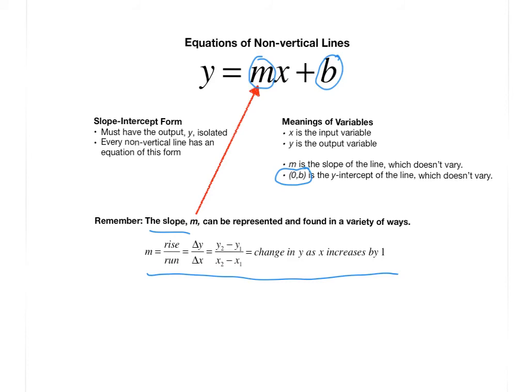The key to this form of a line, the slope-intercept form, is that y must be totally isolated. If y is not totally isolated, then you cannot say that the number x is being multiplied by is the slope, and the number that's being added on is the y-coordinate of the y-intercept. That is only true if y is totally isolated.